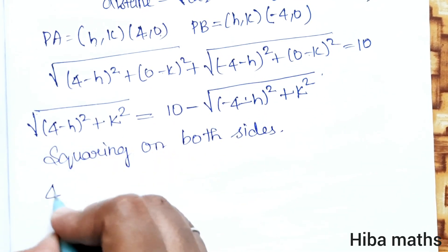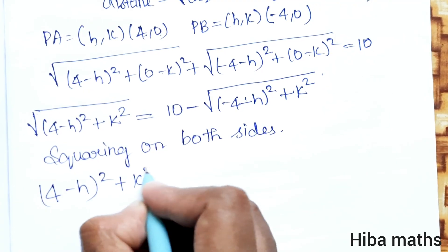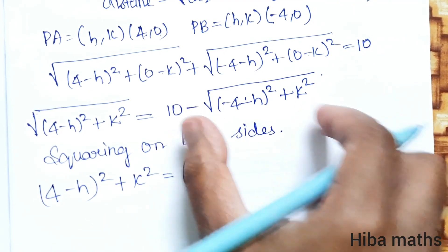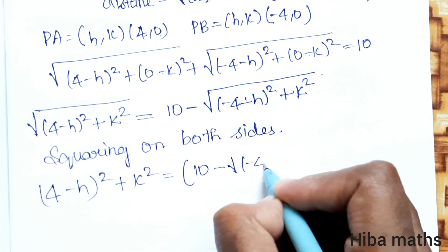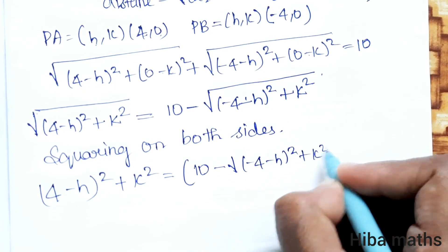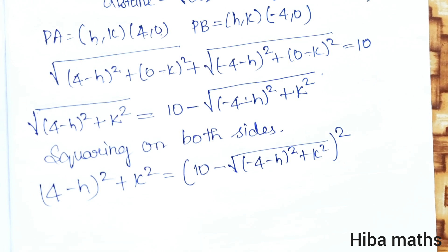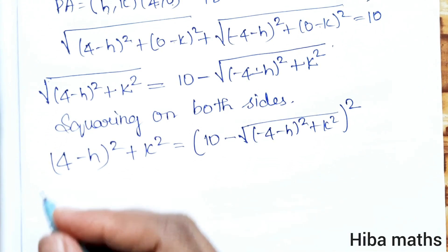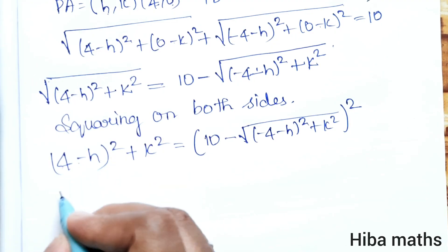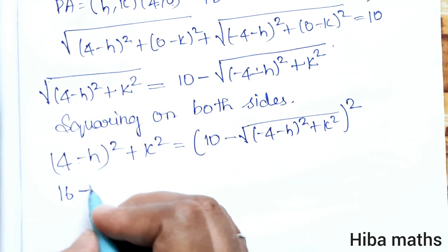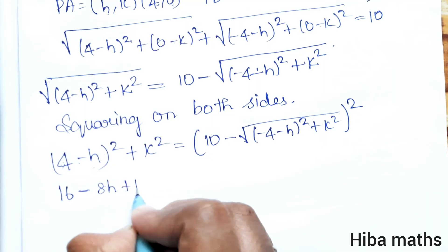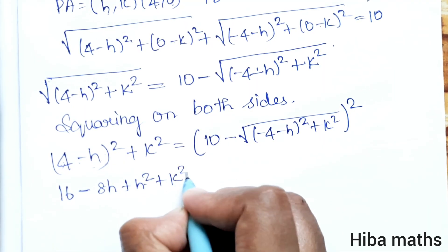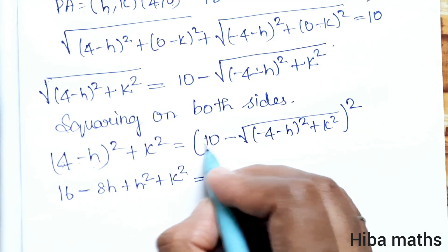Squaring both sides, the square root cancels. Using the (a minus b) whole square format: (4 minus h) whole square plus k square equals [10 minus root of (minus 4 minus h) whole square plus k square] whole square. Expanding: 16 minus 8h plus h square plus k square equals...